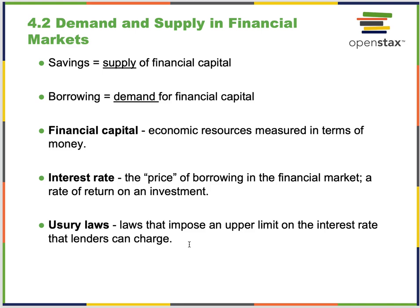A classic example: in movies, a loan shark offers $5,000 when no bank will lend to you, but demands $10,000 back a month later — a 100% return. You have no choice, you agree, then can't repay double the amount. That's the setup for an action-adventure movie — and it illustrates why usury laws exist.